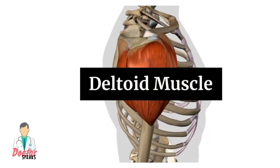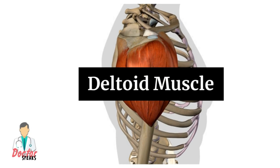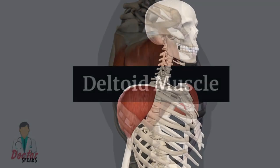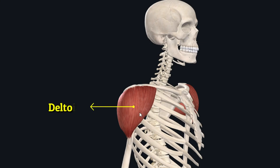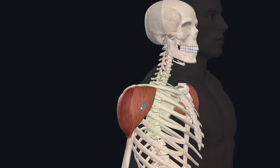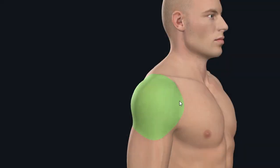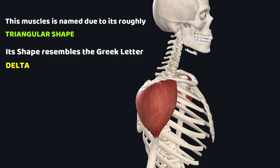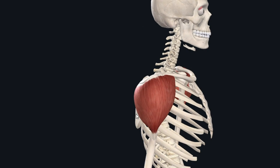Hello everyone, welcome back. In this tutorial we will study the anatomy of the deltoid muscle. The deltoid is a superficial muscle of the shoulder, responsible for the characteristic rounded outline of the shoulder. The deltoid muscle is named due to its roughly triangular shape, because its shape resembles the Greek letter delta.